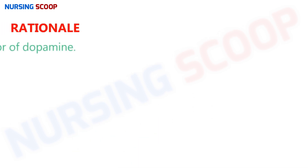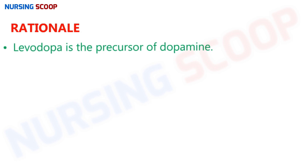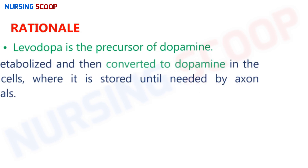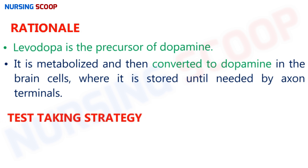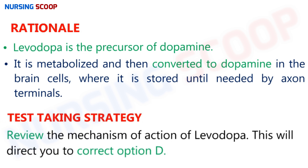Rationale: Levodopa is a precursor of dopamine. When metabolized in the body, it is converted into dopamine in the brain cells, where it is stored until needed by the axon terminals. So levodopa increases the availability of dopamine. Test-taking strategy: review the mechanism of action of levodopa, which will help you select the correct option D.